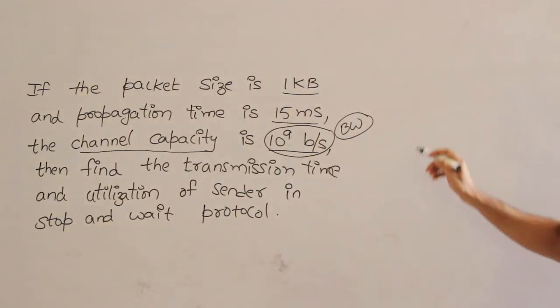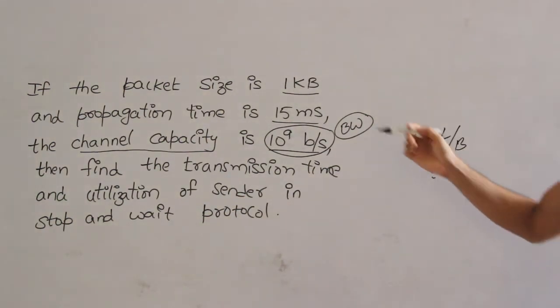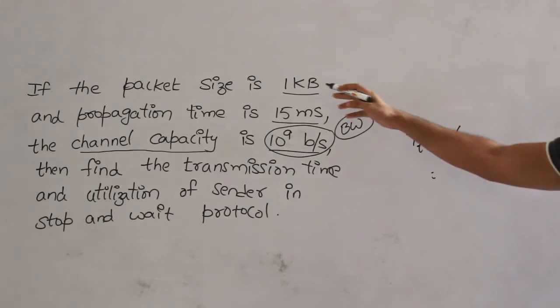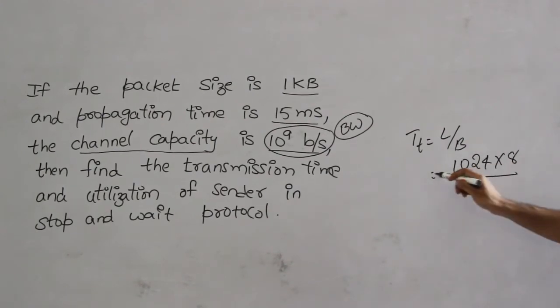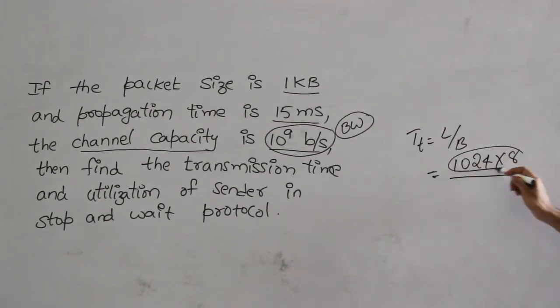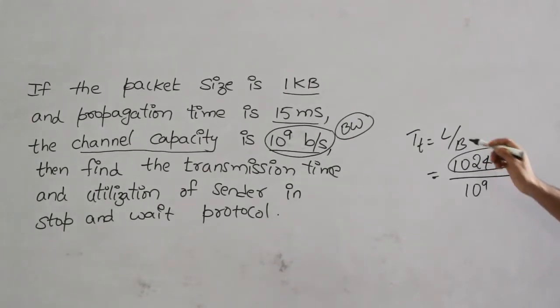Find the transmission time. Transmission time is straightforward. Tt equal to L by B. Now, what is L? L is length of the packet, which is nothing but 1 kilobyte, which is 1024 is kilo and byte is 8. And bandwidth is given in bits. Why did I convert it to bits? Because bandwidth is given in bits. Divided by 10^9. This is Tt.